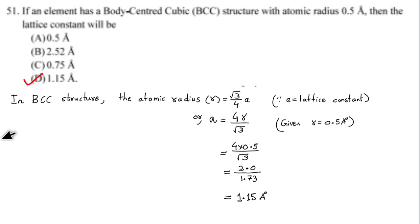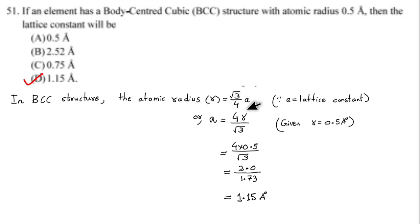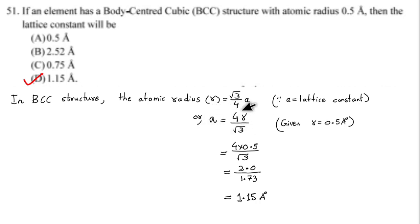Question number 51: If an element has a body-centered cubic BCC structure with atomic radius 0.5 angstrom, then the lattice constant will be what? For BCC, the radius-lattice constant relation is: radius R is equal to root 3 divided by 4 times the lattice constant A. So, lattice constant A is equal to 4R divided by root 3. R is given as 0.5 angstrom.